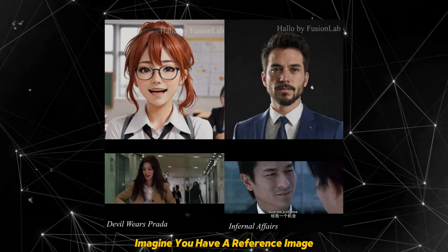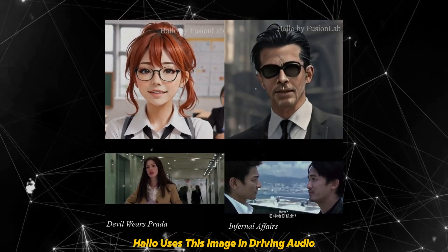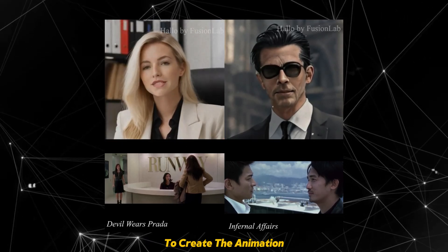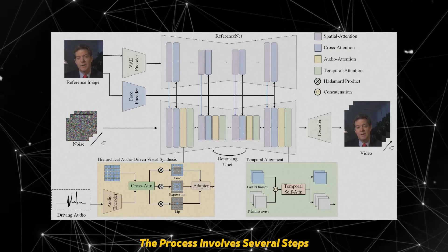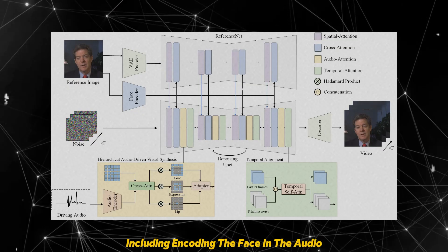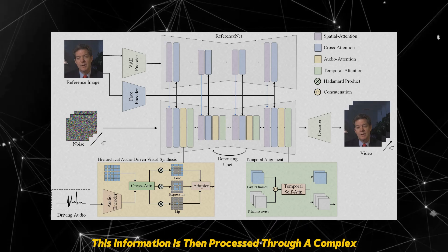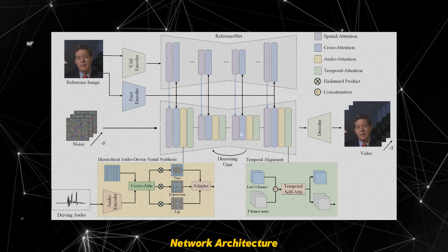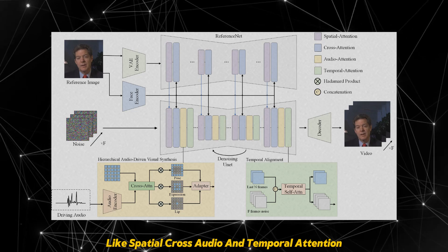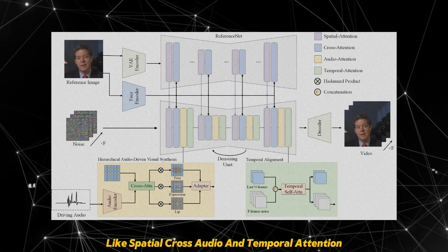Imagine you have a reference image — this is where everything starts. Halo uses this image and driving audio to create the animation. The process involves several steps, including encoding the face and the audio. This information is then processed through a complex network architecture that includes various attention mechanisms like spatial, cross, audio, and temporal attention.